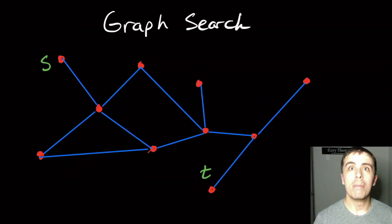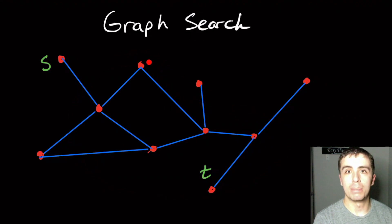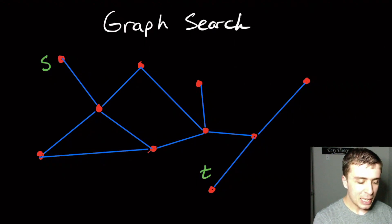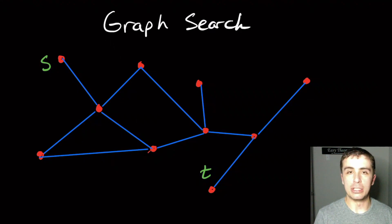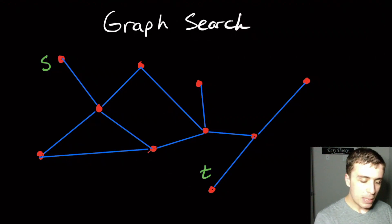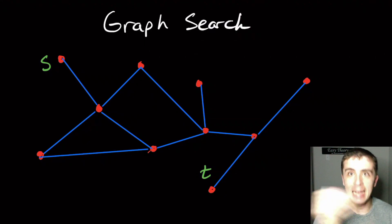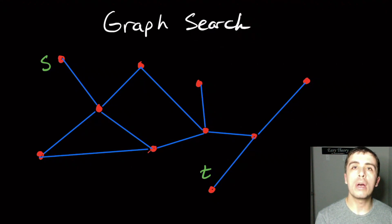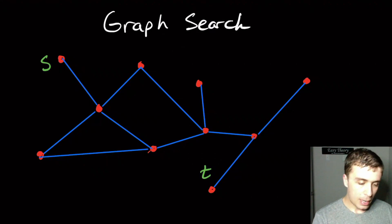I want to talk about graph search and how you actually search a graph. A graph is just a bunch of nodes and lines connecting them. We have two nodes, one called s and one called t, and we want to go from s to t along the edges. We're going to look at the shortest path — the minimum number of edges — to reach t from s, without repeating edges.